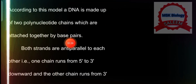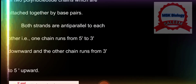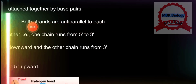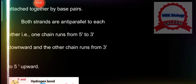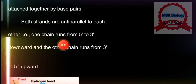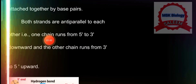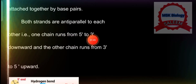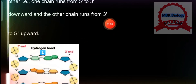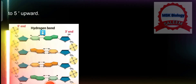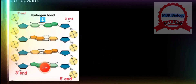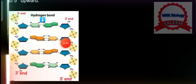Both strands are anti-parallel to each other. DNA has two chains, and both strands are anti-parallel to each other. One chain runs from five prime to three prime downward, and another chain runs from three prime to five prime upward. Is diagram mein aap dekh sakte hain — this is a DNA molecule.